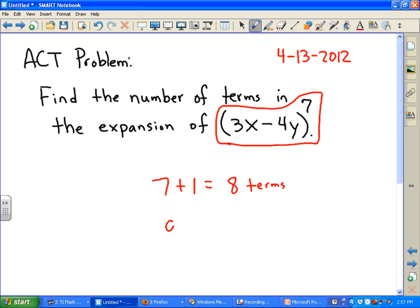So if you have a plus b, a binomial raised to the nth power, then you're always going to have n plus 1 is the number of terms. Okay, so this was the answer for this problem.